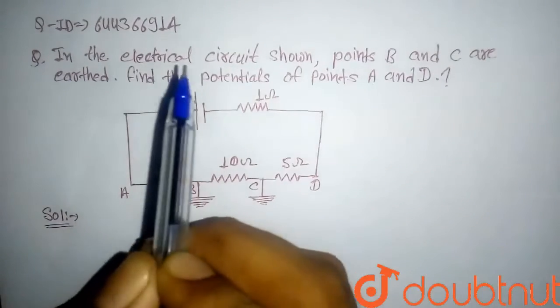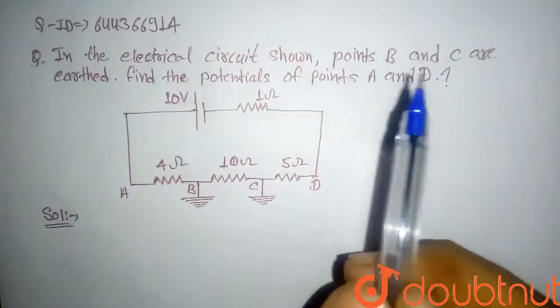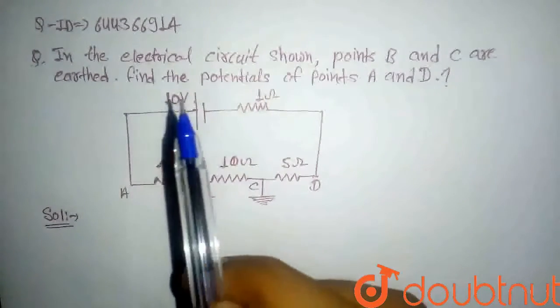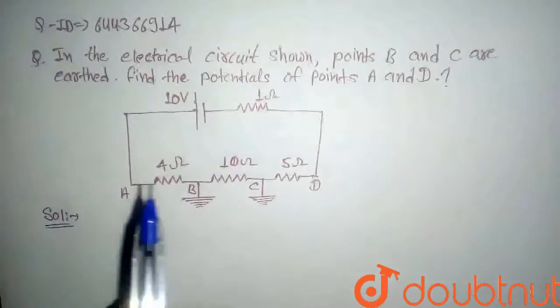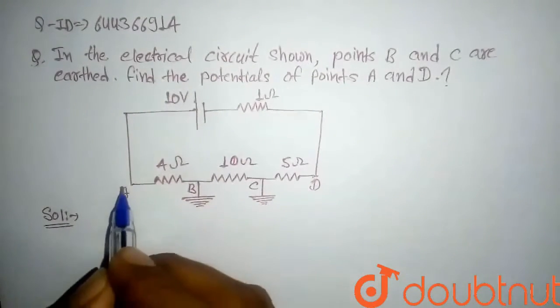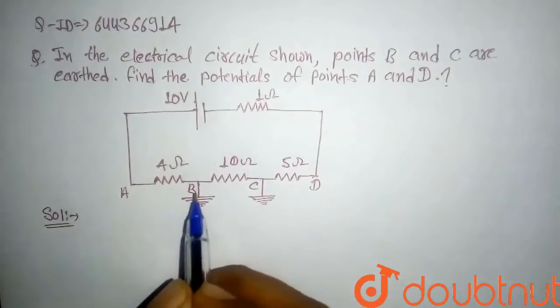In the electrical circuit shown, points B and C are earthed. Find the potentials of points A and D. So here we have to find the potential at point A and D. In the question it is given...